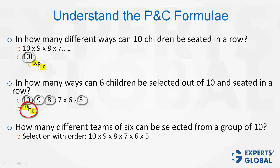But this includes different orders, whereas the question is about team selection, where the order will not matter. So, how do we remove orders from here?